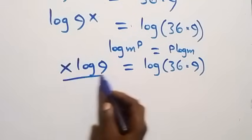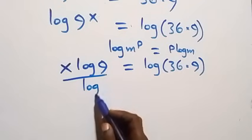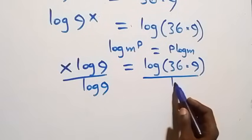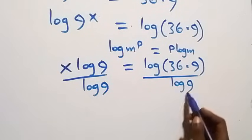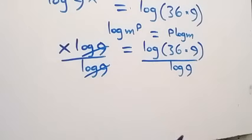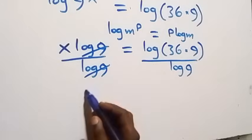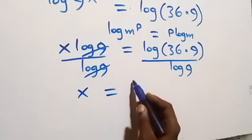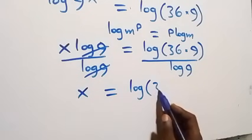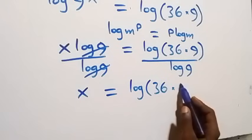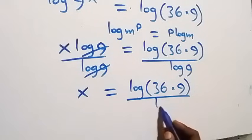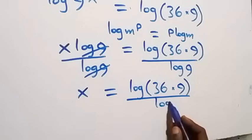So x log 9 equals to log of 36 times 9. We divide both sides by log 9, and log 9 cancels on the left, giving us x equals to log(36 times 9) over log 9.